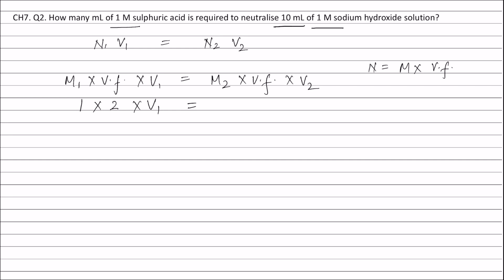M2 is the molarity of sodium hydroxide solution that is 1, into valency factor of sodium hydroxide is 1 because acidity of sodium hydroxide is 1, into V2 of sodium hydroxide which is given as 10.